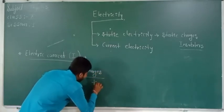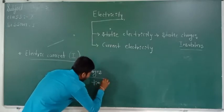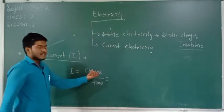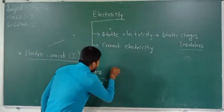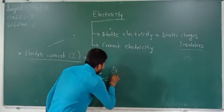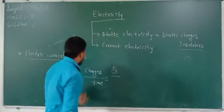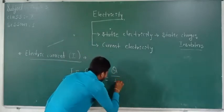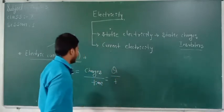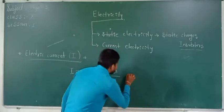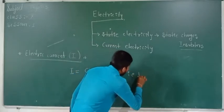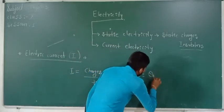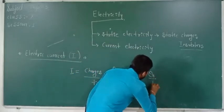That is, time in a unit time. Charges are denoted by the letter Q, and time is denoted by the letter T. That is, I is equal to Q divided by T.